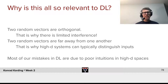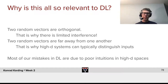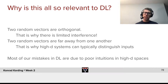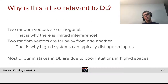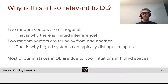We've seen that two random vectors are far away from one another. That is why high-dimensional systems can typically distinguish inputs. Now, arguably, most of our mistakes in deep learning are due to us having poor intuitions about what can and cannot happen in high-dimensional spaces.